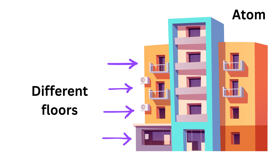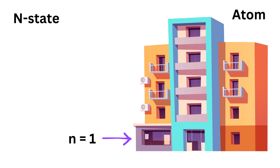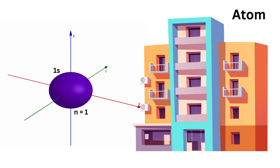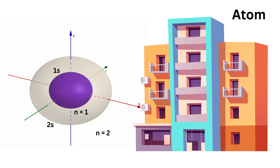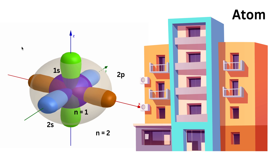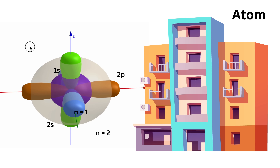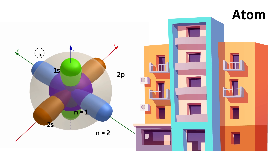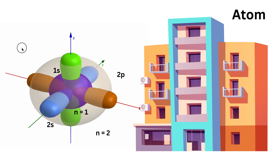Each set of rooms belongs to a particular floor of the house. This floor number is what we call the n state, or principal energy level. The first floor, n equals 1, is closest to the center and holds only one round s room, while higher floors — n equals 2, n equals 3, and so on — have more rooms, like one s room and three p rooms for n equals 2, and sometimes even d or f rooms on higher levels.